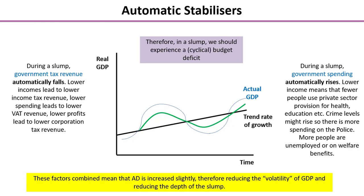In a slump we should experience a cyclical budget deficit. Overall, over the course of an economic cycle — looking at the boom and its accompanying slump — we should experience a balanced budget. Ideally, the budget surplus experienced during the boom could be matched by a corresponding budget deficit during the recession.